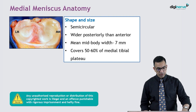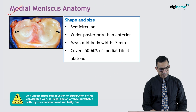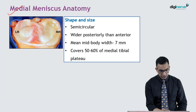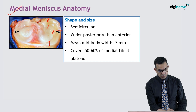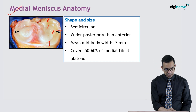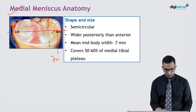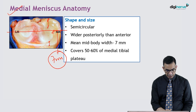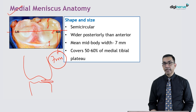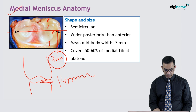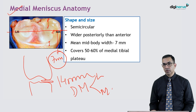The medial meniscus is semicircular and wider posteriorly than anteriorly. The mid-body width is about 7 mm, so on MRI in the midsection you will not find it more than 7 mm. In a mid-body coronal section MRI, if you see the meniscus wider than 7 mm — or reaching 14 mm — you classify it as a discoid meniscus (DM), either lateral or medial depending on the side.